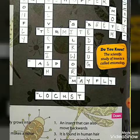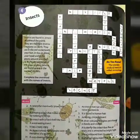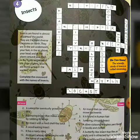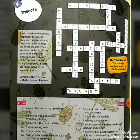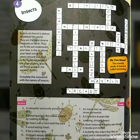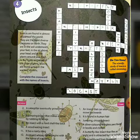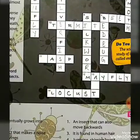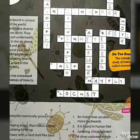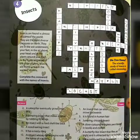Now number eight, on the down side. Silk is produced from its cocoon — what is it? I know you are all aware of this insect. Your answer is silkworm. Silkworm.